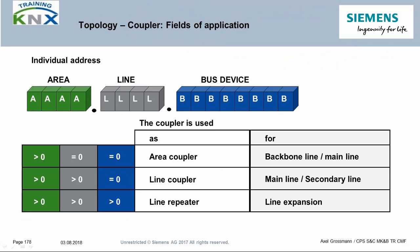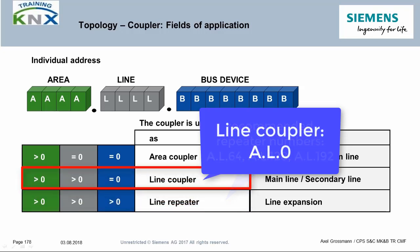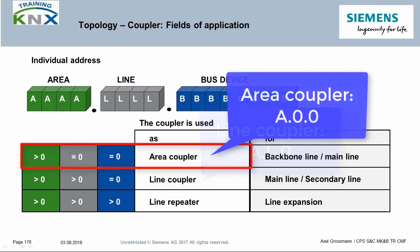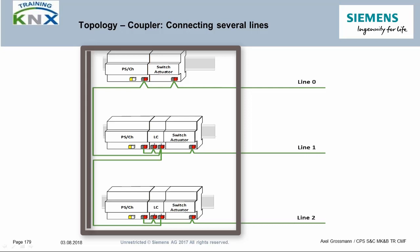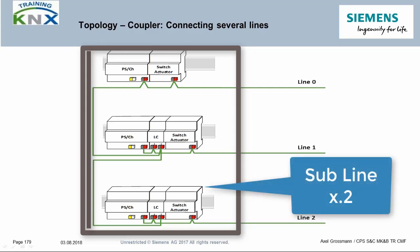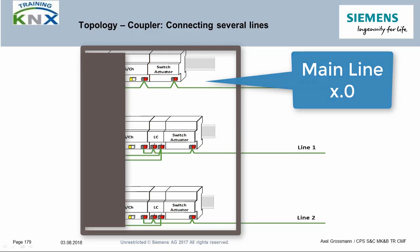To repeat, here again the addressing of the couplers. A line repeater is not different from a normal bus node — all its address components are greater than zero. However, it is recommended to use the numbers 64, 128, and 192 as the subscriber address of a line repeater. Line couplers have the subscriber number zero, a line address greater than zero, and an area address greater than zero. Area couplers also have the device number and the line number zero. Each DIN rail has its own line assignment; all rails are connected in parallel at the terminal of the higher level line of the line coupler.